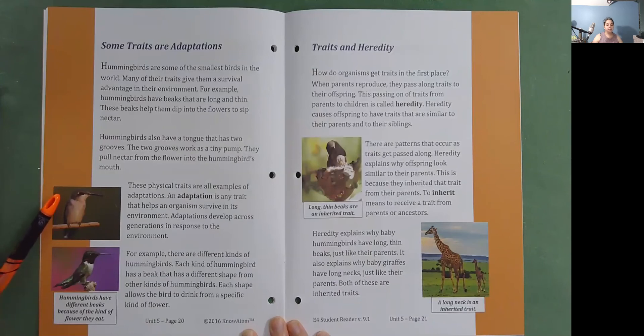These physical traits are all examples of adaptations. An adaptation is any trait that helps an organism survive in its environment. Adaptations develop across generations in response to the environment. For example, there are different kinds of hummingbirds. Each kind of hummingbird has a beak that has a different shape from other kinds of hummingbirds. Each shape allows the bird to drink from a specific kind of flower. Hummingbirds have different beaks because of the kind of flower they eat.